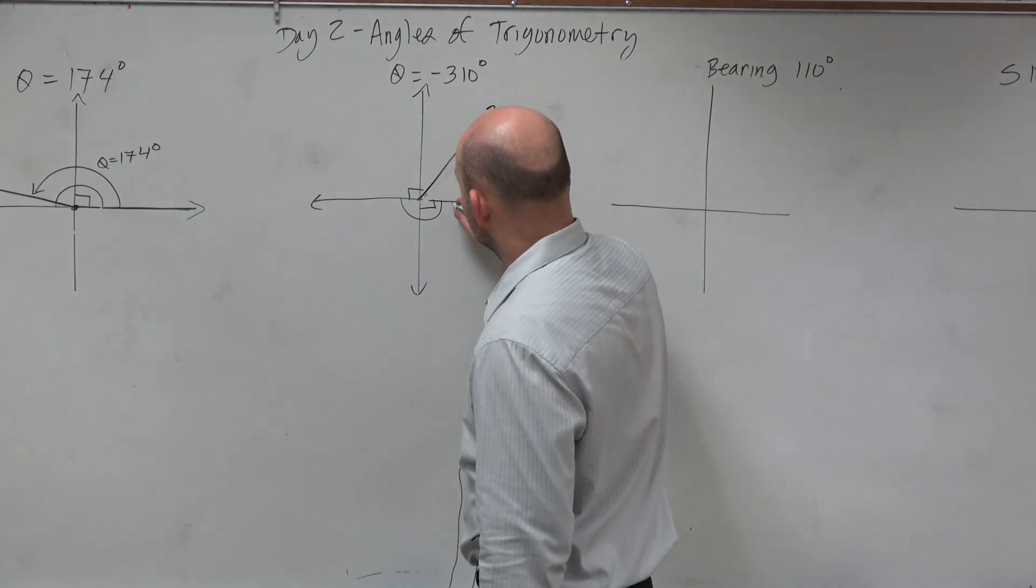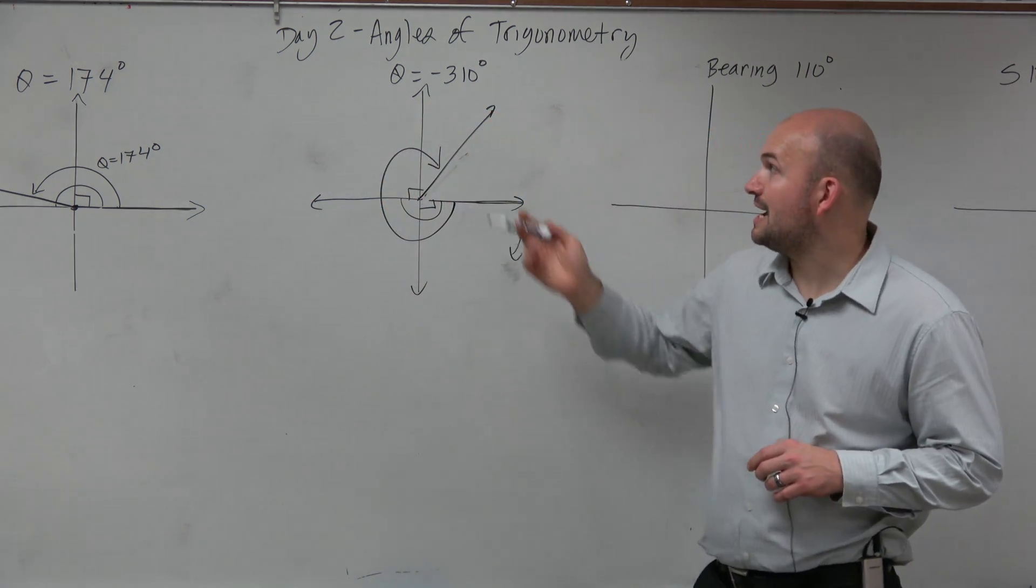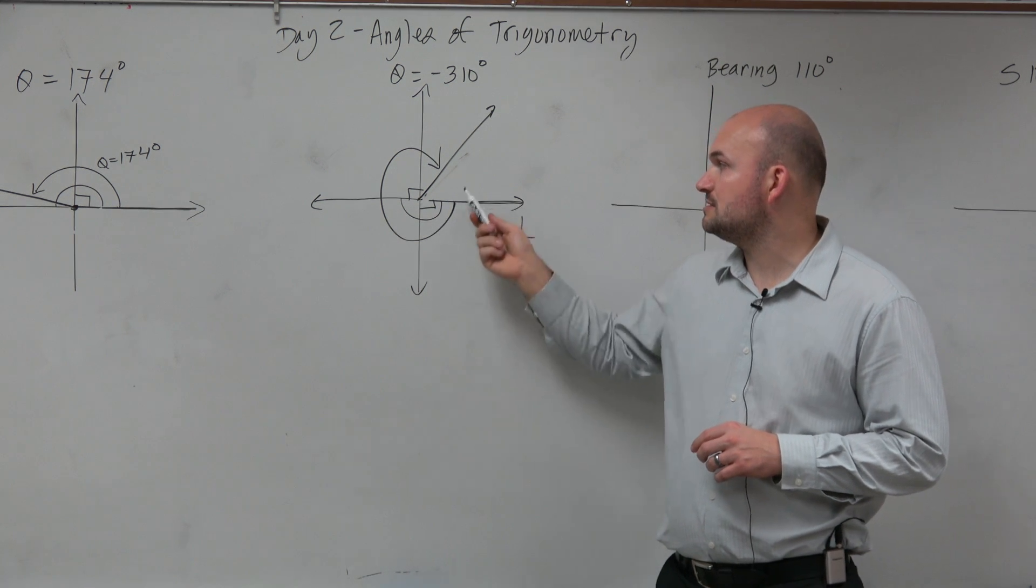Right here would be our terminal side, so our initial side. So we can say the angle of 310 degrees is roughly around there.